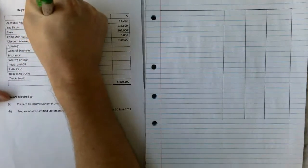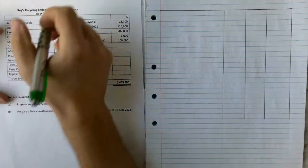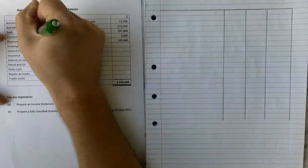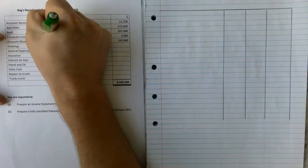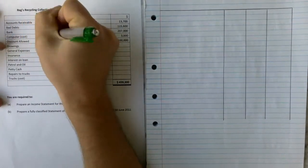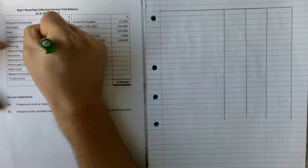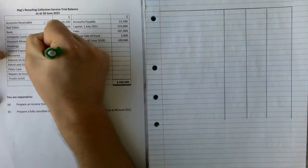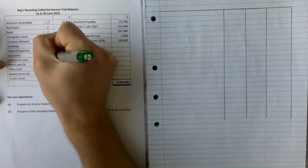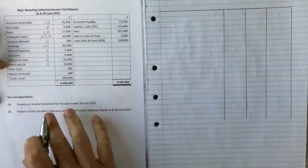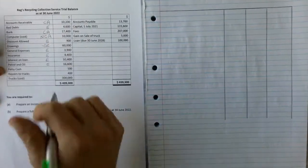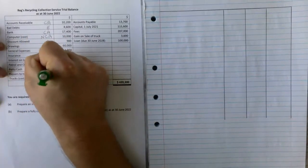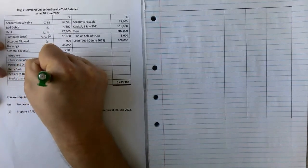We know accounts receivable as a current asset. Bad debt expense, bank current asset, computer non-current asset. Discount allowed as an expense, drawings as a negative owner's equity or a contra owner's equity, general expenses, insurance is an expense, interest on loan expense, petrol and oil I'm going to say as an expense, petty cash is a current asset.